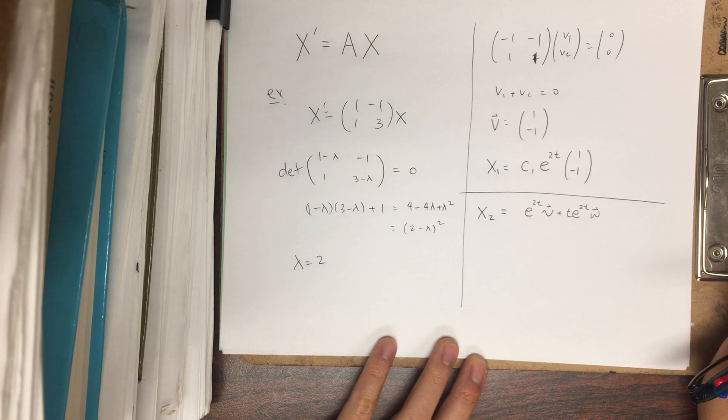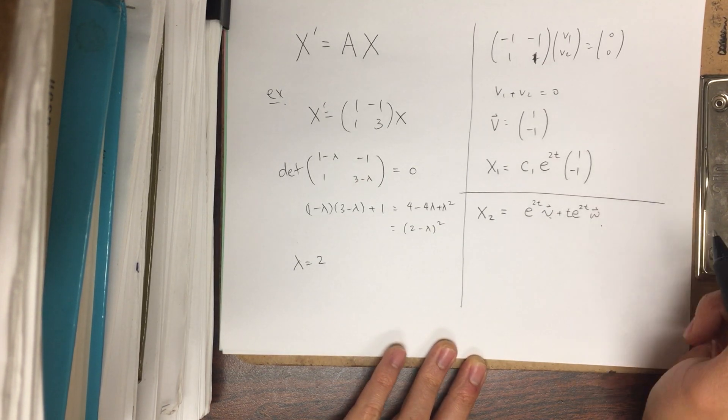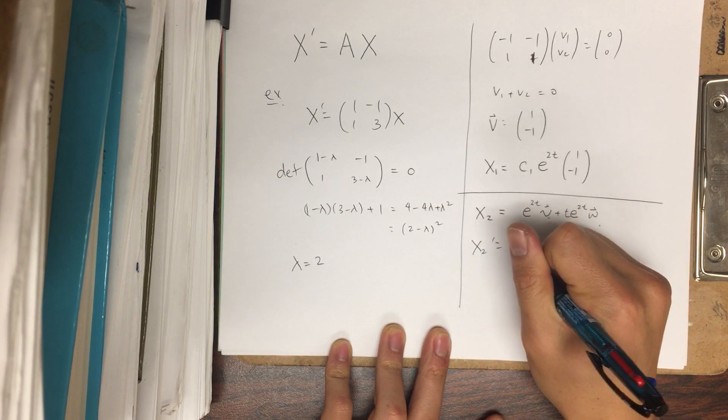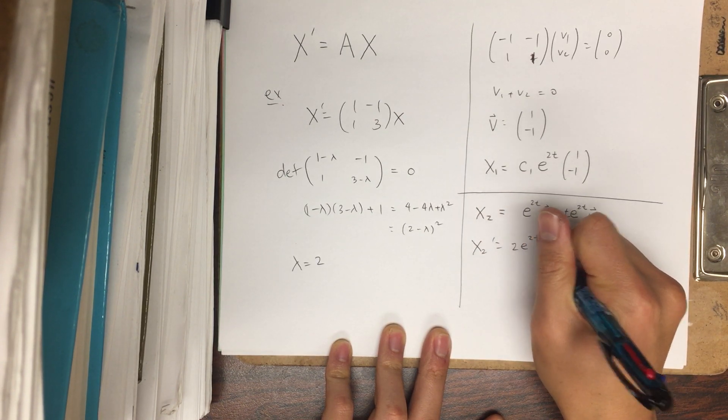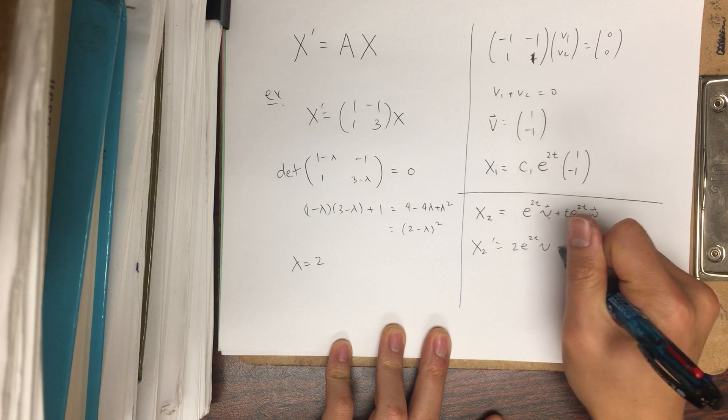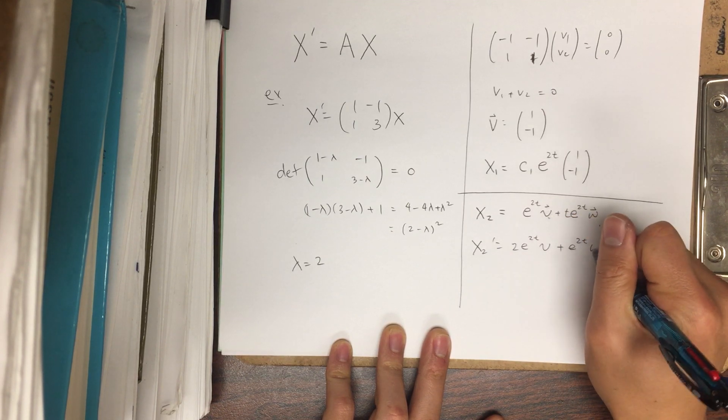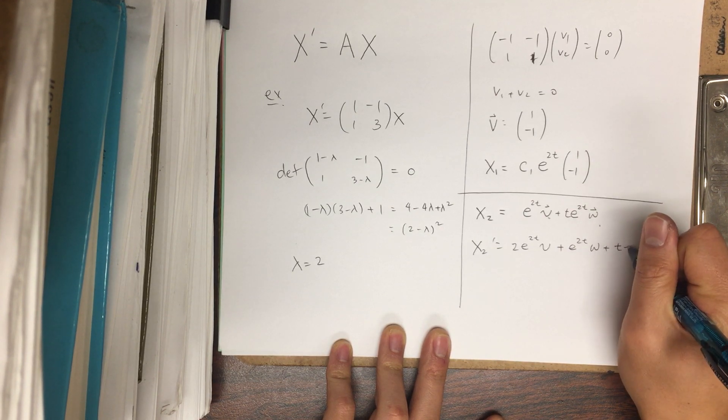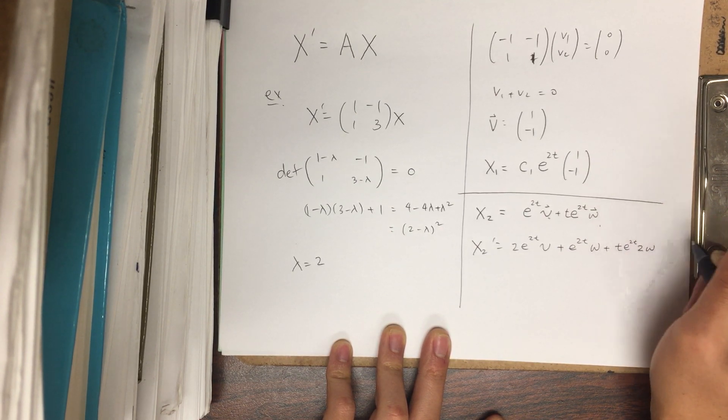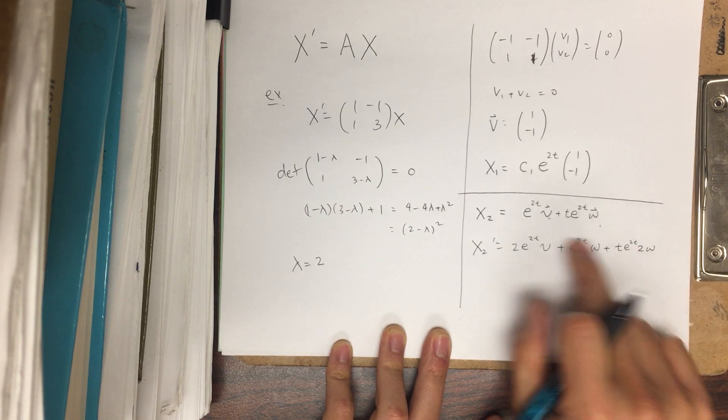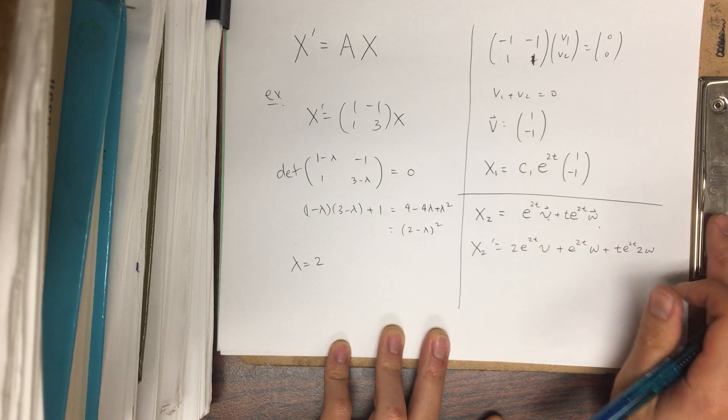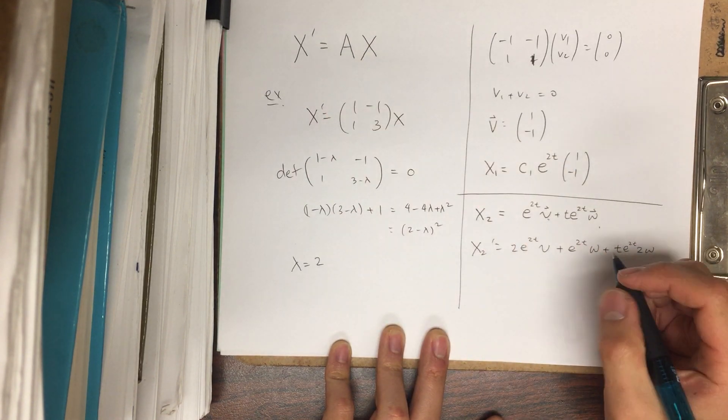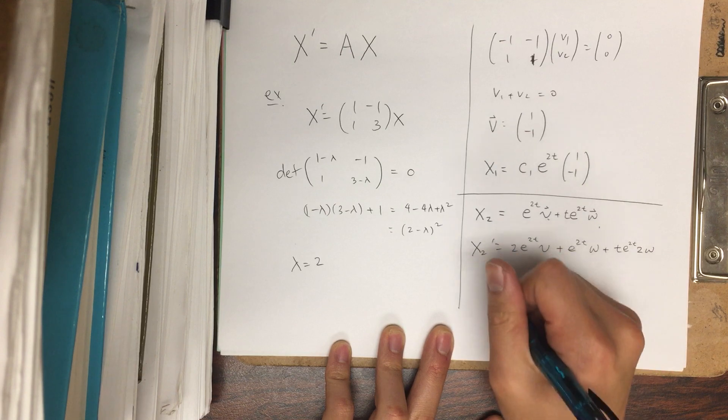Okay, but how can we find these vectors? So let's take the derivative, so we get 2e^(2t) v plus e^(2t) w plus t e^(2t) times 2w, because remember the v's and the w's are going to be some constant vectors.